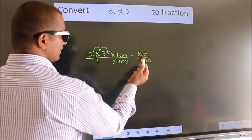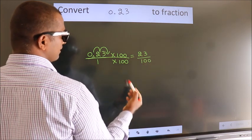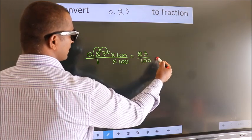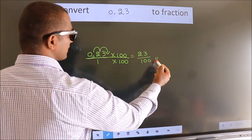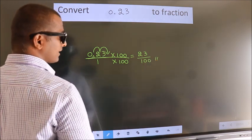This cannot be simplified further. So this itself is our fraction — 23 over 100.